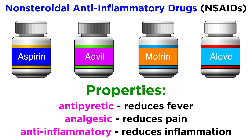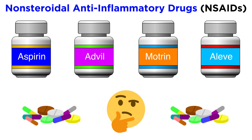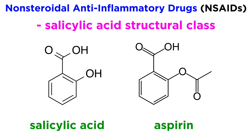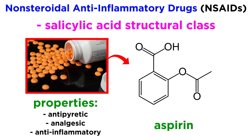In the previous tutorial, we learned some basics regarding non-steroidal anti-inflammatory drugs which apply broadly to the whole category, but we want to know some details regarding specific NSAIDs as well, so let's start with aspirin. Aspirin is a member of the salicylic acid structural class of NSAIDs. Like other NSAIDs, aspirin is commonly prescribed for its antipyretic, analgesic, and anti-inflammatory effects.